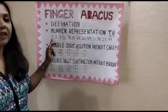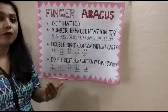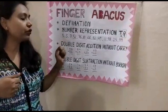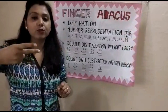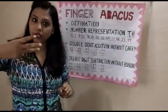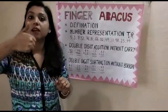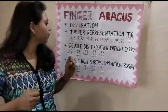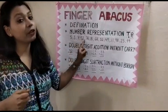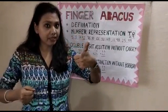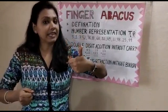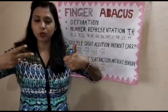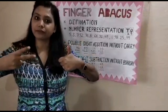Let's do some examples. To represent 5, just show the thumb — that's 5. For 3, show 1, 2, 3 fingers. For 7, show 5 plus 1 plus 1. For 52: the left hand shows 50 because it's the 10's place, and the right hand shows 1, 2 — that's 52.